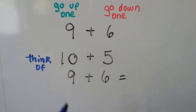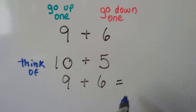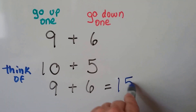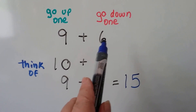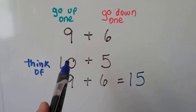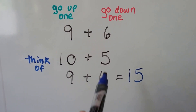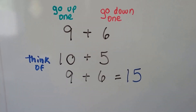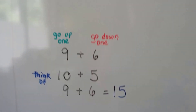10 plus 5 is 15, so 9 plus 6 must be 15. We took 1 away from the 6, we gave it to the 9 to make it a 10 — it's now a 5, so we have 10 plus 5. Let's try it again.